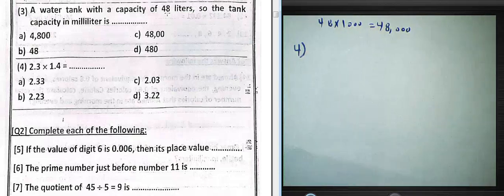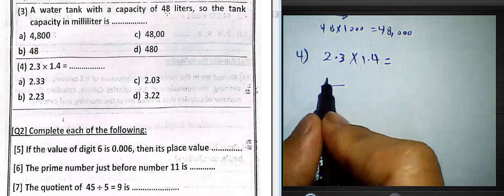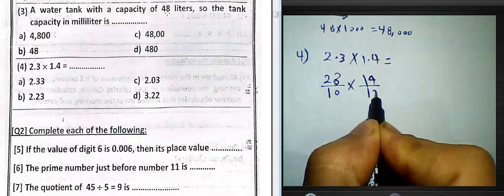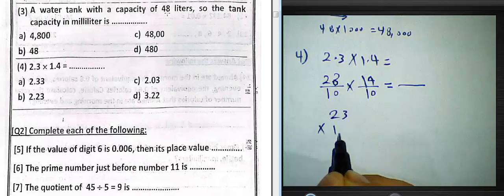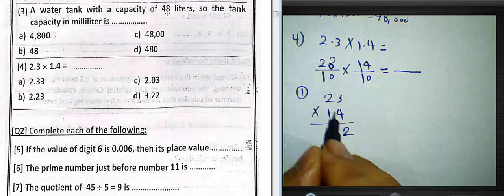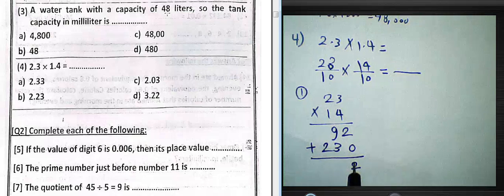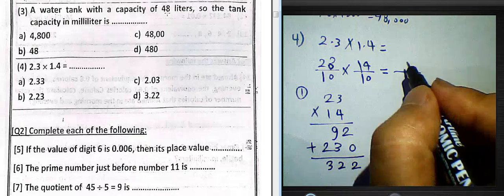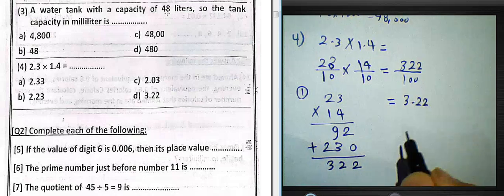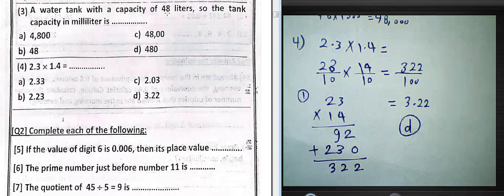Question number four: 2.3 multiplied by 1.4. We write 2.3 as 23 over 10 and 1.4 as 14 over 10. Using long multiplication, 23 times 14 equals 322. So the result is 322 over 100, which gives 3.22. We must choose letter D.